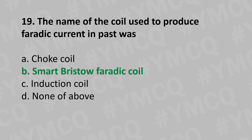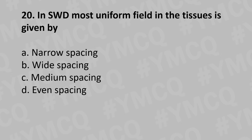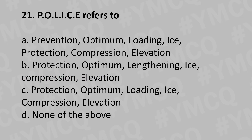Moving to our 20th question: in shortwave diathermy (SWD), the most uniform field in tissue is given by: Option A: Narrow spacing, Option B: Wide spacing, Option C: Medium spacing, Option D: Even spacing. And the answer is Option C: Medium spacing.